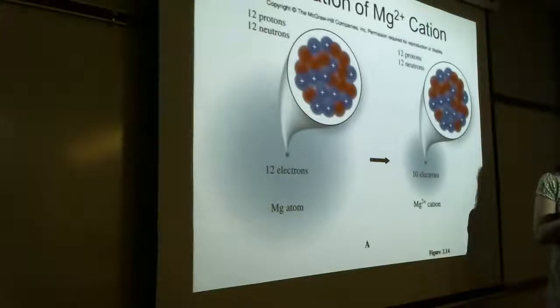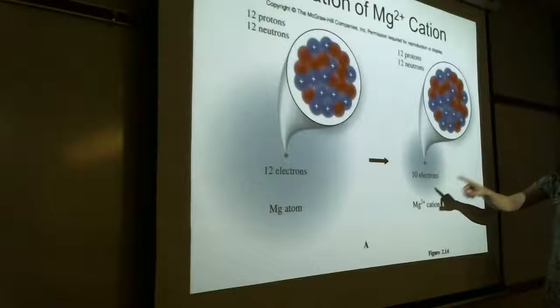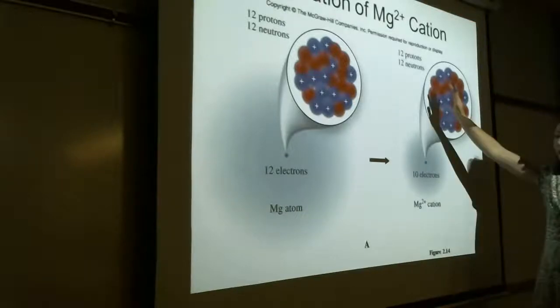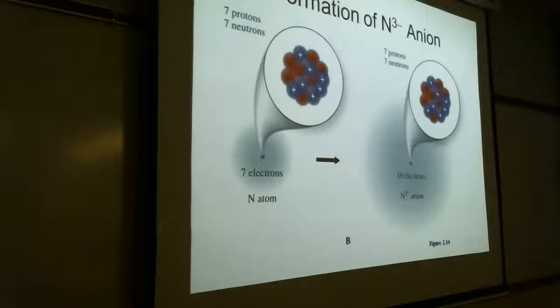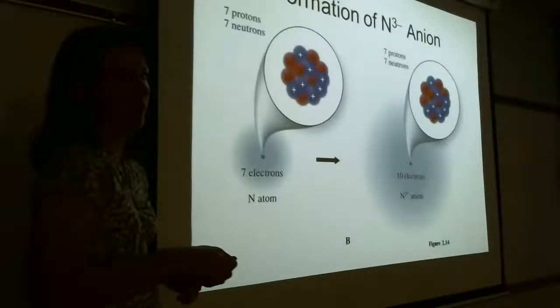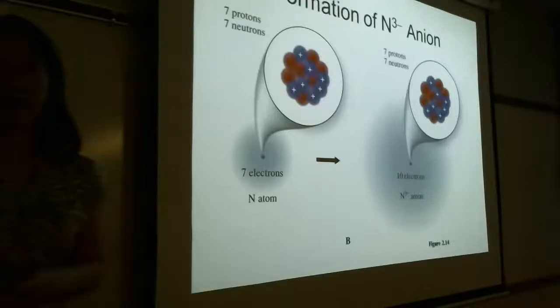When we make an ion, nothing changes in the nucleus — we're not changing the number of protons or neutrons. We're only changing the number of electrons. For example, Mg versus Mg²⁺: all we changed is that we lost two electrons. Compare this to an isotope, which changes the number of neutrons. An ion changes electrons; an isotope changes neutrons. The nucleus stays the same in both cases.